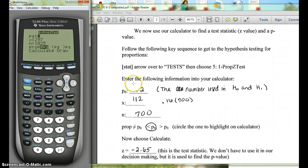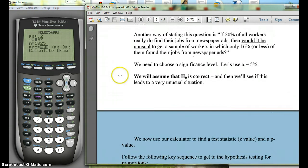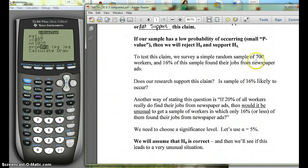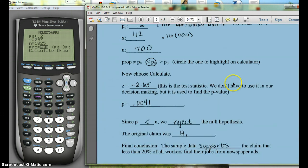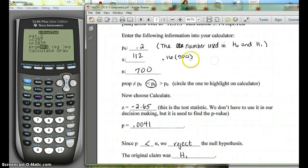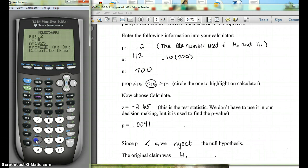Now our p0, that's what is used in our null and our alternate hypothesis. Remember, that was 0.2, so we're going to put 0.2 in there. Our x, now we were told that 16% of the 700 people found their jobs. So our x-value is how many people is that really, 16% of 700? In your calculator, you'd exit out of here and you'd do 0.16 times 700. That's going to give you 112. So we're going to put 112 here.